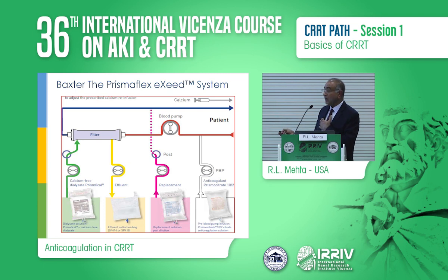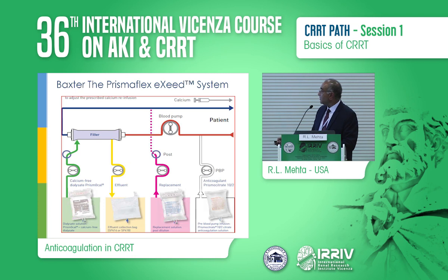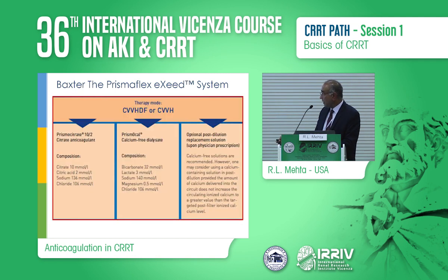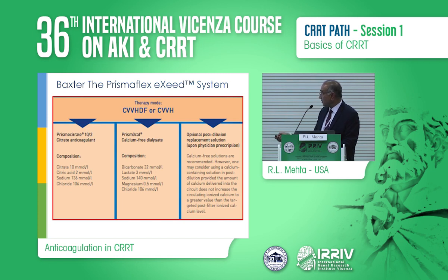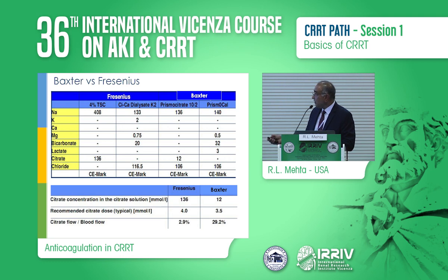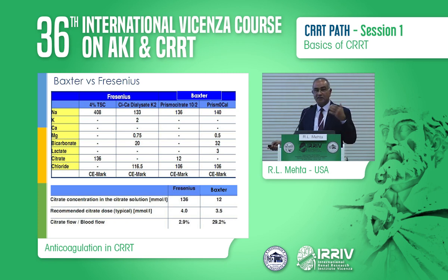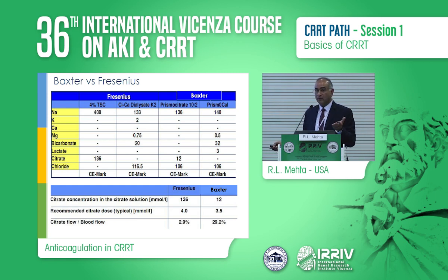The other way is the Prismaflex Gambro Exceed system. Their system uses a calcium-free Prismocal and Prismocitrate coming in, again with a fixed relationship of calcium to citrate. Their bicarbonate is 32 and sodium is 140. They also have a calcium-free solution but suggest you could use a calcium-containing solution. Comparing the two, the Prismacitrate has a concentration of about 136 versus Baxter's 12. Baxter has taken the Ashita Tolwani protocol — a very dilute solution — as a way to provide the citrate.